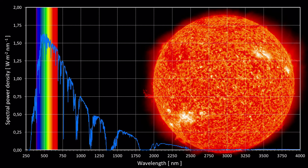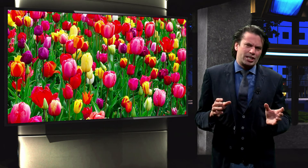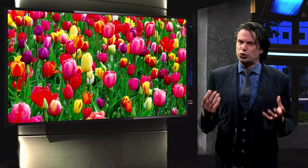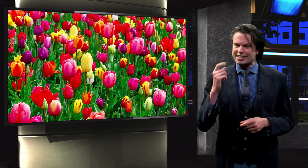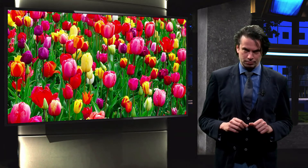We can gather from the figure that our sun also emits light in the ultraviolet region, which is below 400 nm, and in the infrared region, which has a wavelength greater than 700 nm. It isn't a coincidence, of course, that the wavelengths we can observe with the naked eye are the wavelengths emitted most by our sun.